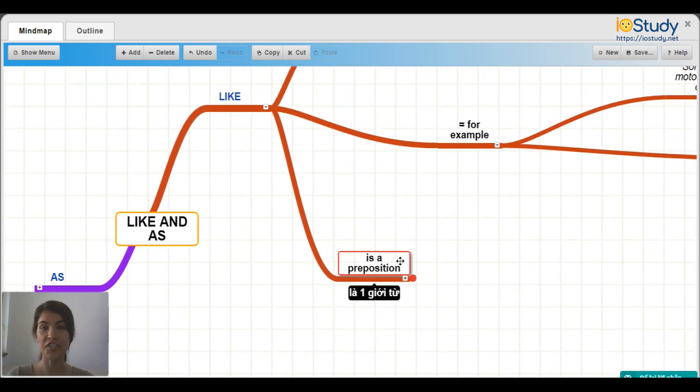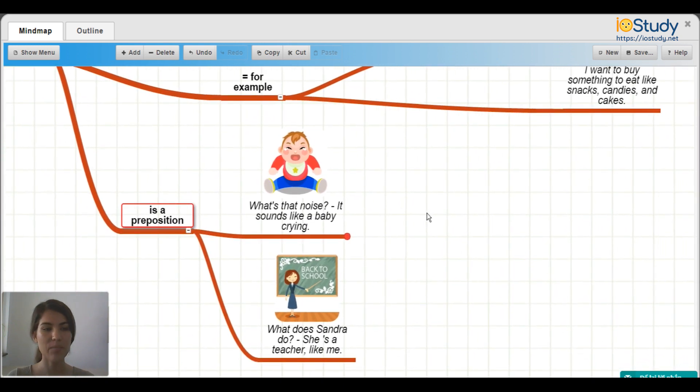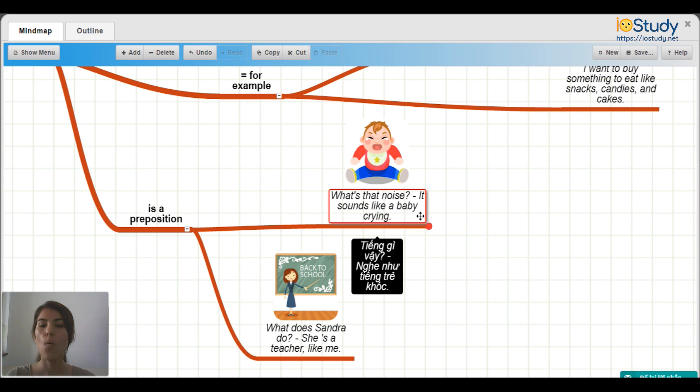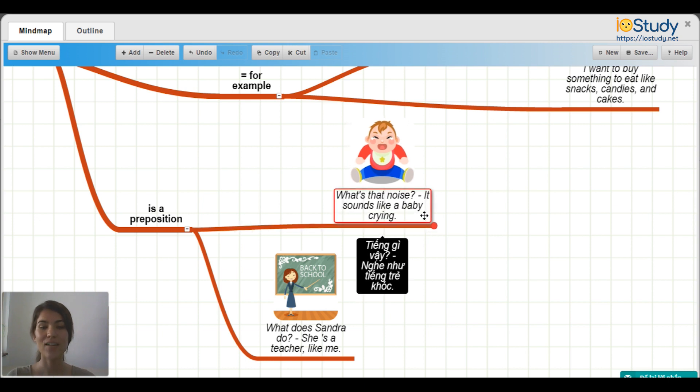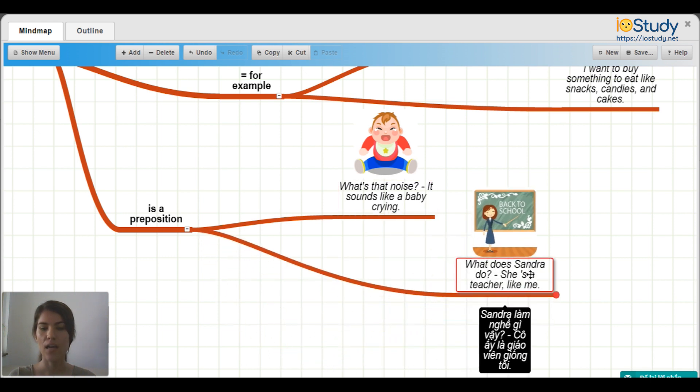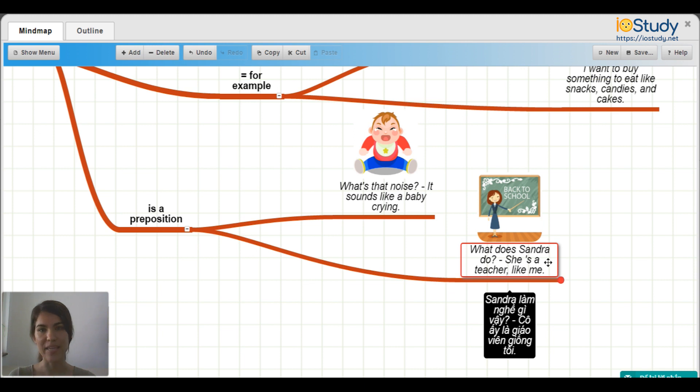Finally, like is a preposition. So here are some example sentences using like as a preposition. What's that noise? It sounds like a baby crying. What does Sandra do? She's a teacher, like me. So as you can see in both of these sentences, we're using like as a preposition.